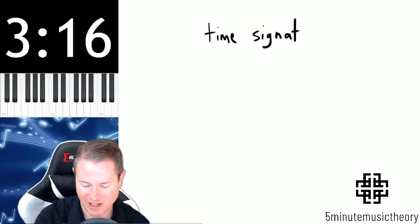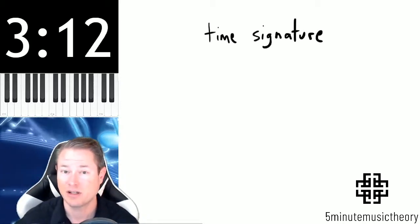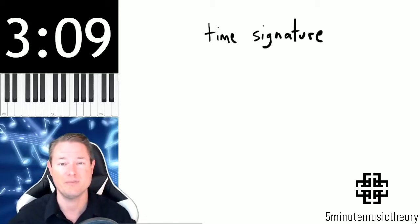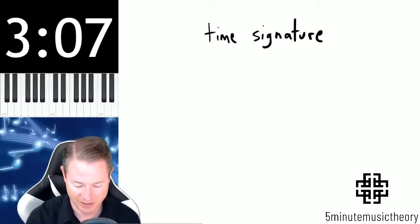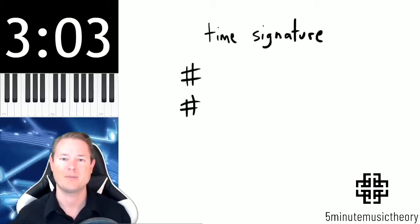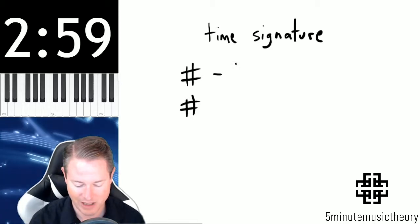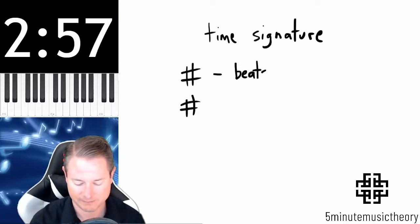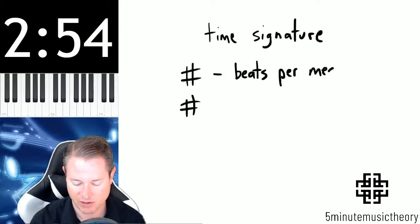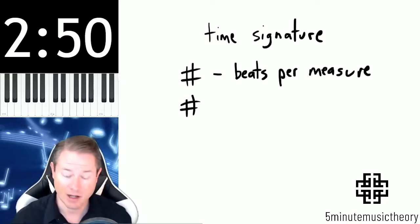So the time signature, in a similar way to how a key signature tells you what the key is, the time signature tells you what the meter is in a piece of music. There's always two numbers in a time signature: there's a top number and there's a bottom number. That top number indicates the amount of beats per measure, and that number can really be any number.